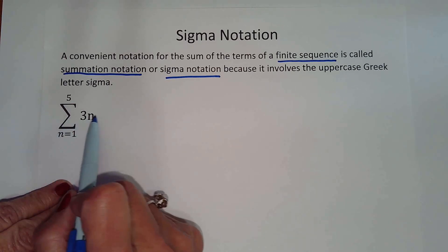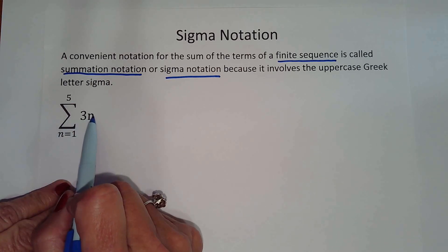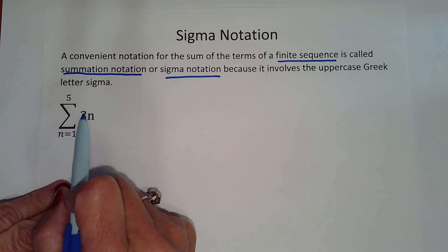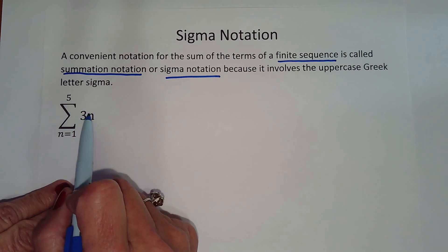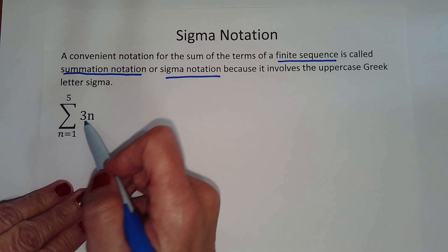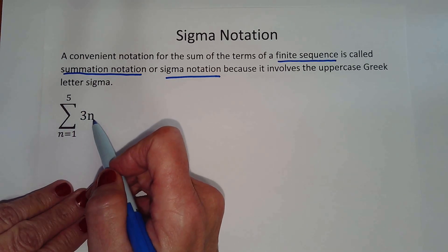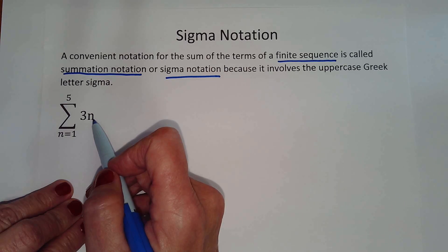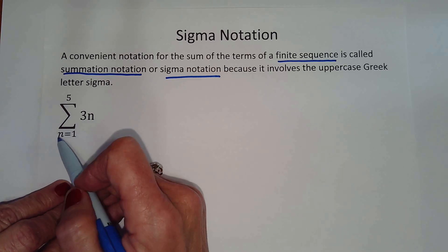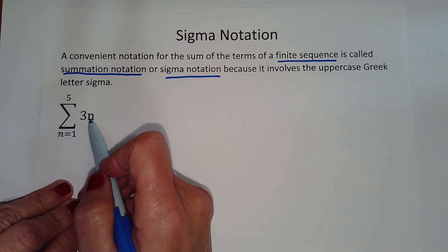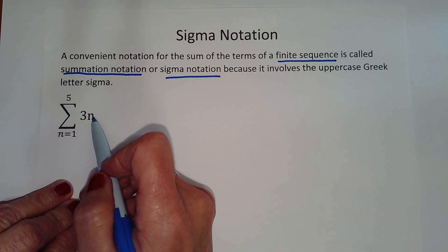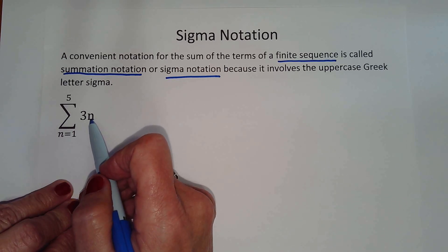In front of the letter sigma is the explicit formula or the rule of the sequence. If there is a variable in the formula — we have n here — then our index must be the same. Other letters can be used; you'll often see k, j, or i.